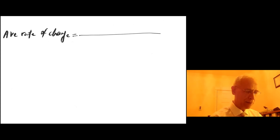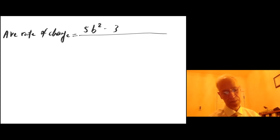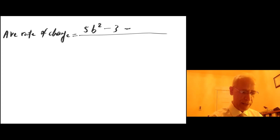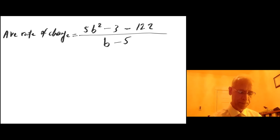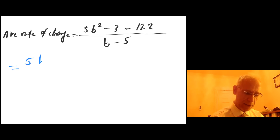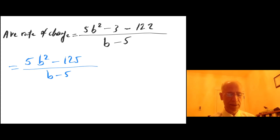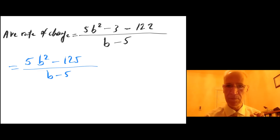Average rate of change equals f of b, which is 5b squared minus 3, minus f of a which is 122, over b minus a where b minus a is b minus 5. That simplifies to 5b squared minus 125 over b minus 5. Some of you just left it there — please don't do that in a college math course. You need to simplify further.